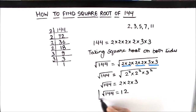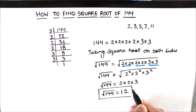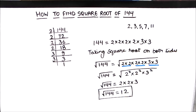So this is our final answer that the square root of 144 is 12. This is how you can find the square root of 144 using the prime factorization method. I hope this video is helpful to you.